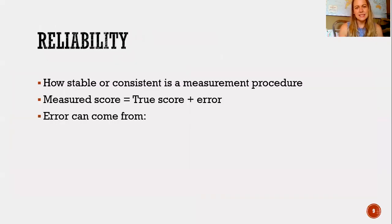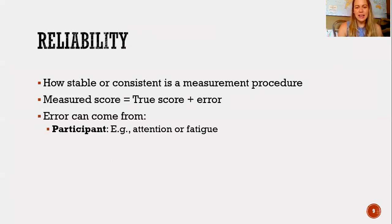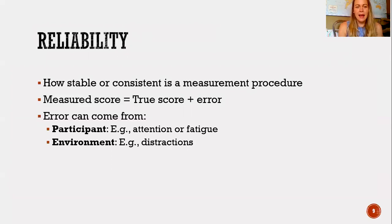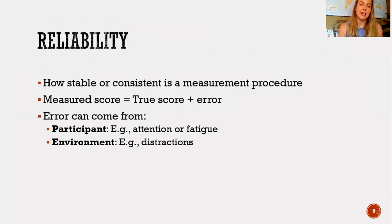Reliability is about how stable or consistent a measurement procedure is. Your measured score is a combination of your true actual score as well as some error. That error can come from you, the person taking the test — maybe your attention gets diverted or you start getting tired. It could come from the environment: maybe there are distractions around you, a loud noise blaring. If you're taking a test while that loud noise is going, you're probably not going to do as well, and if that noise is part of the testing procedure, it's not going to be very reliable.